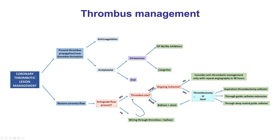However, in most cases like our patient who has ongoing symptoms, the next step is to perform some type of thrombectomy, followed by balloon angioplasty and stenting.